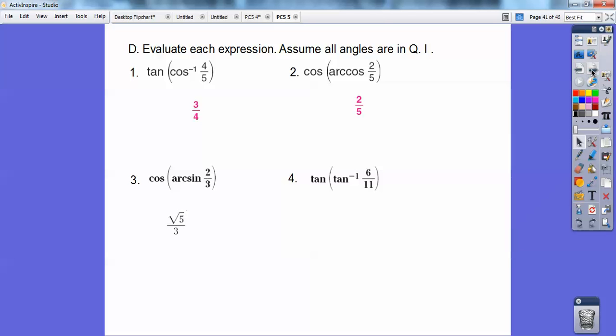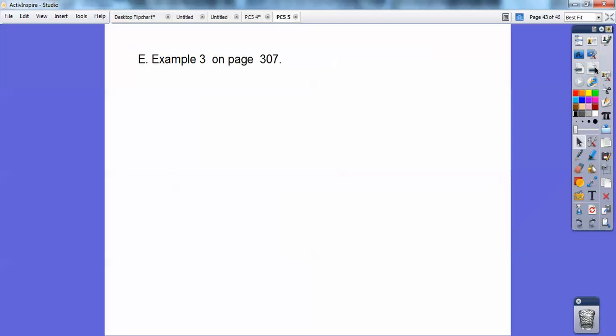How about this one? Tangent of the inverse tangent of 6 11ths. Just like this was 2 fifths, this is going to be 6 11ths, because tangent and inverse cancel each other out right there.